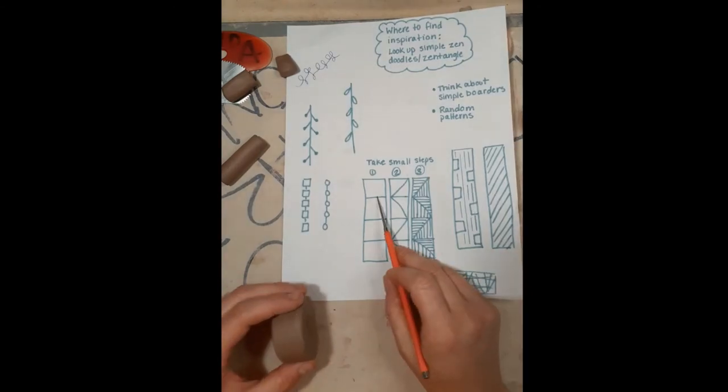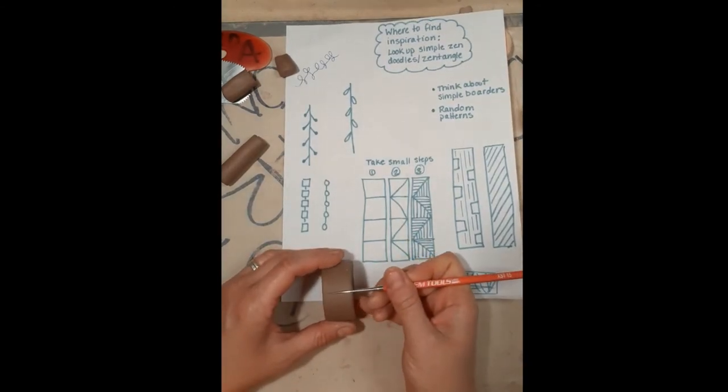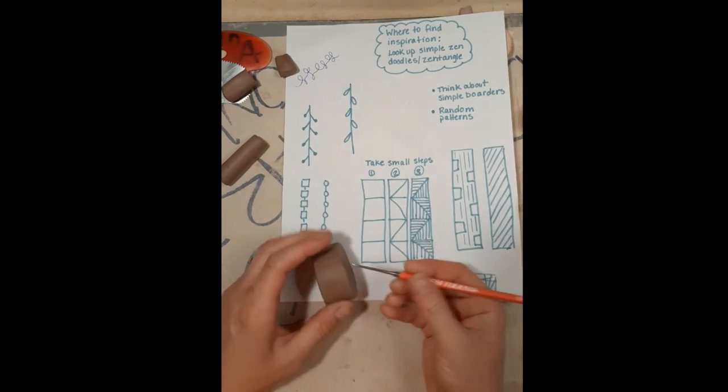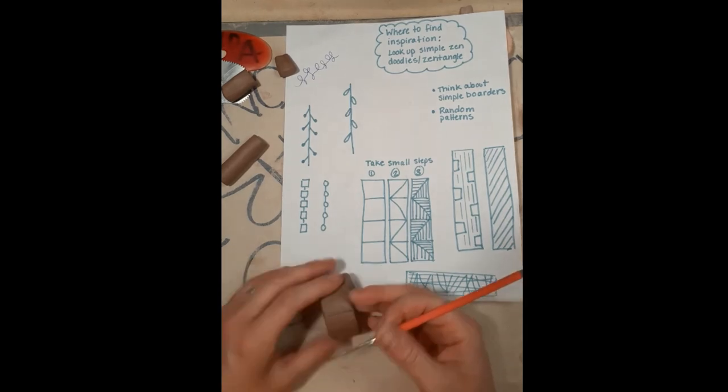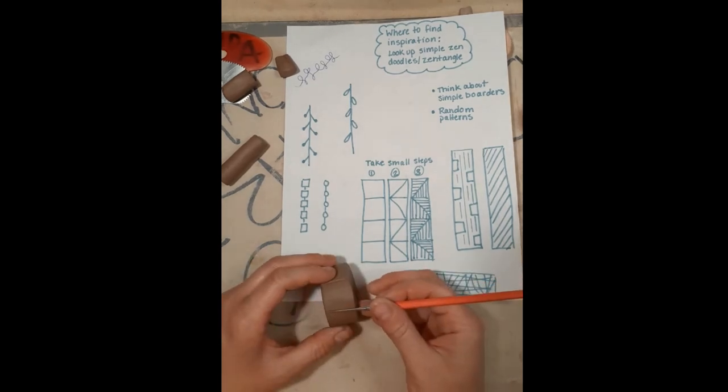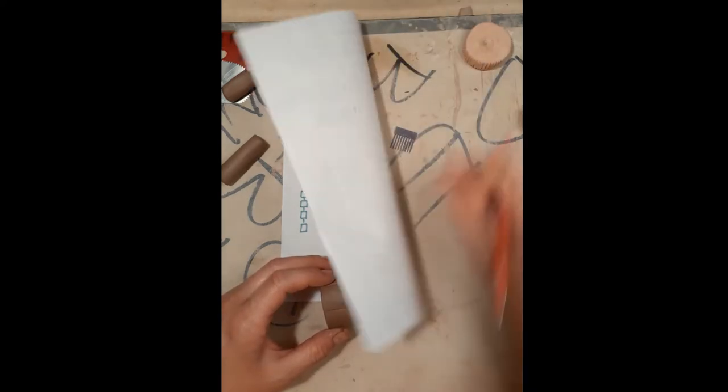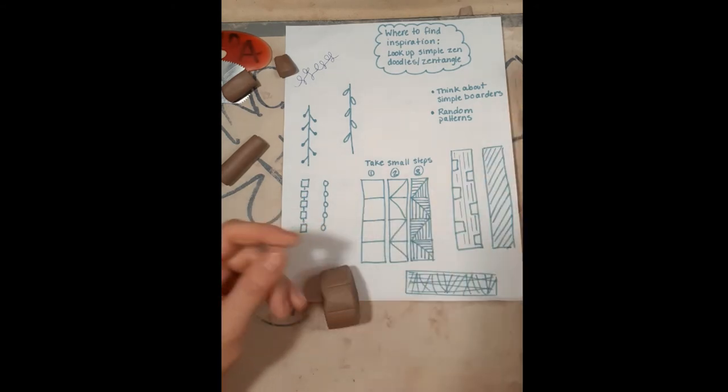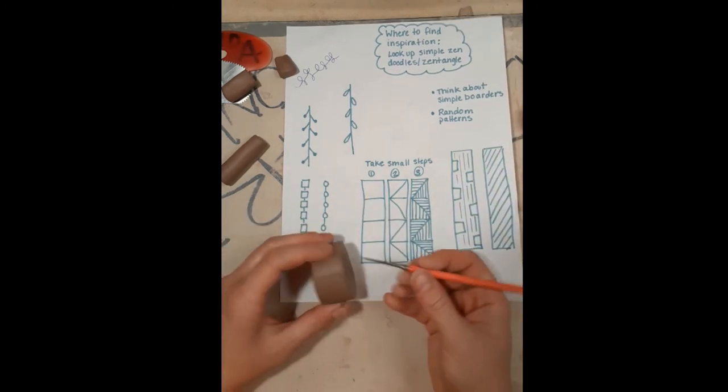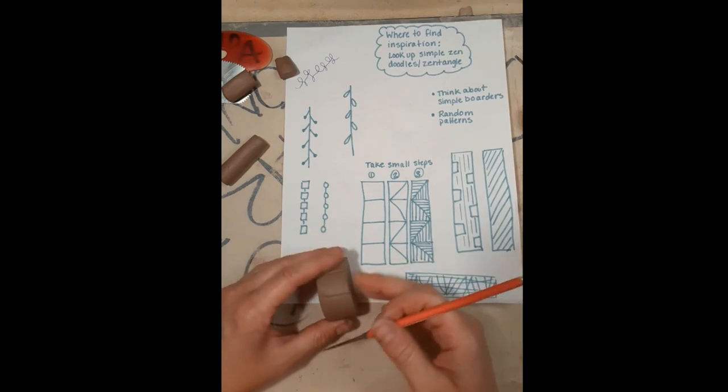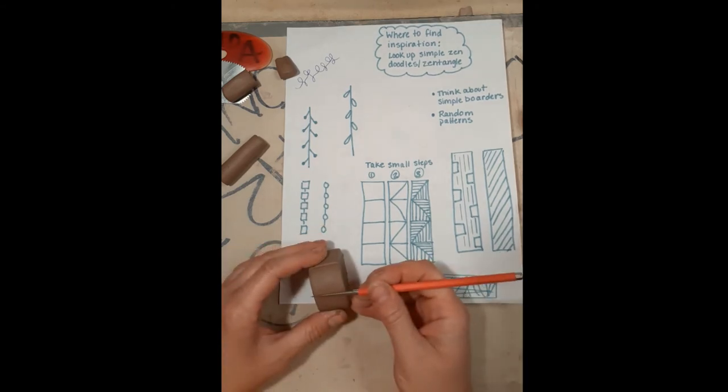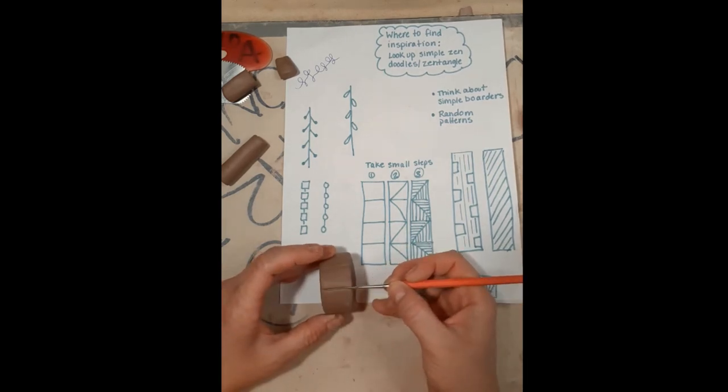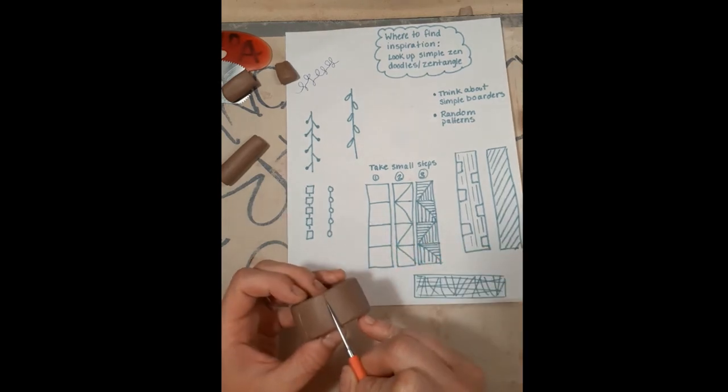Alright, so for this one, we're just going to block it off. Just make little squares. I'm going to try to get them an even number. And if it doesn't, it doesn't really matter. I have some that don't match up, right? I think this one here, when it came back around, it didn't match up. And once you do the pattern, you don't even notice. I'm okay with that. I'm not perfect. I don't expect my designs or my pots to be perfect. So you can see we have that all the way around.